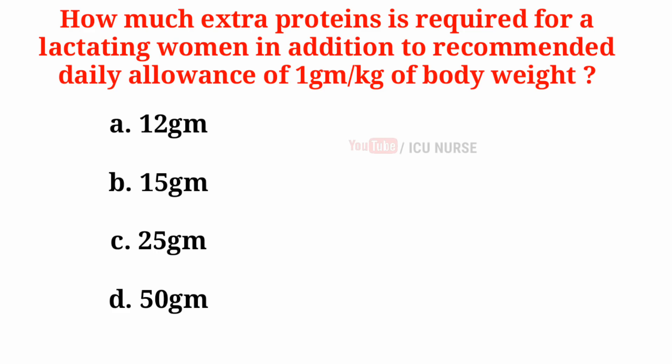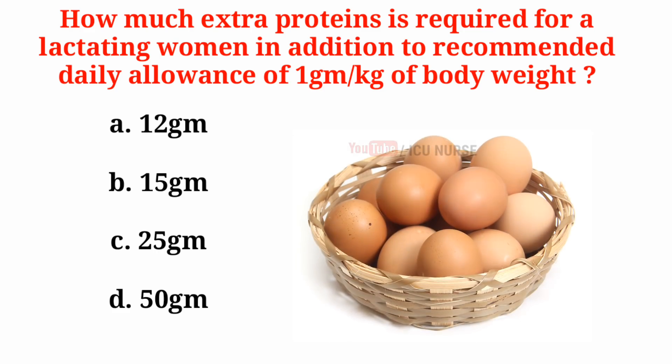How much extra protein is required for a lactating woman in addition to the recommended daily allowance of 1 gram per kg of body weight? A. 12 grams, B. 15 grams, C. 25 grams, D. 50 grams.